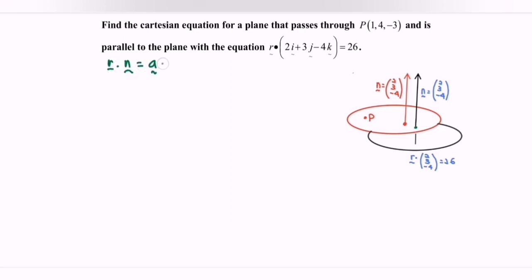So kindly substitute, r dot n equals a dot n. So x, y, z will be the point for r. Normal, we have (2, 3, -4) equals to point P (1, 4, -3) dot with the normal (2, 3, -4).